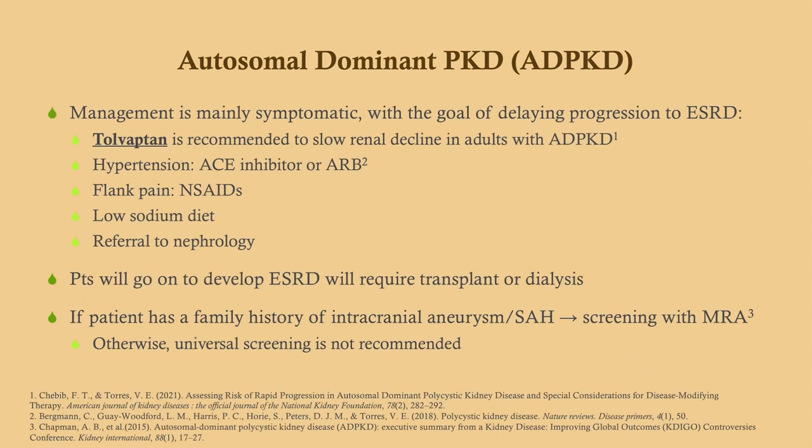Management is mostly symptomatic. But remember the involvement of vasopressin — we have a drug called Tolvaptan, an inhibitor of vasopressin, which slows the progression of ADPKD by slowing renal decline. The idea is that vasopressin stimulates the development of more and more cysts, so if we can slow that, we slow renal decline. Renal volume increases at basically the same rate that renal function decreases — as renal volume goes up, your GFR goes down. This is essentially a mass effect behind the whole process.